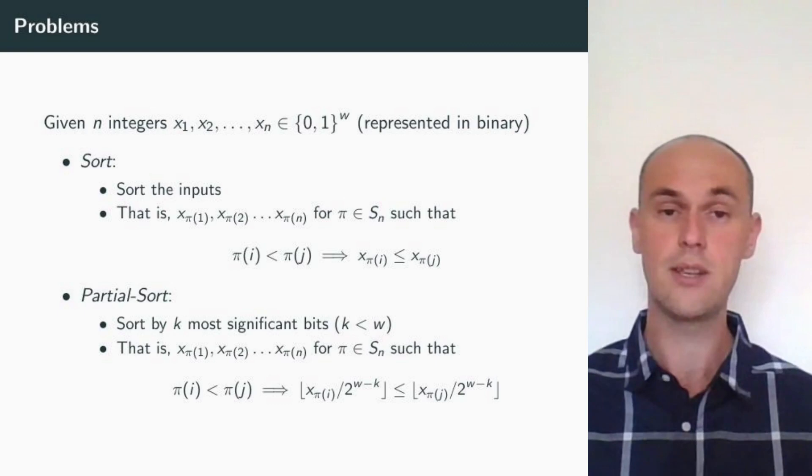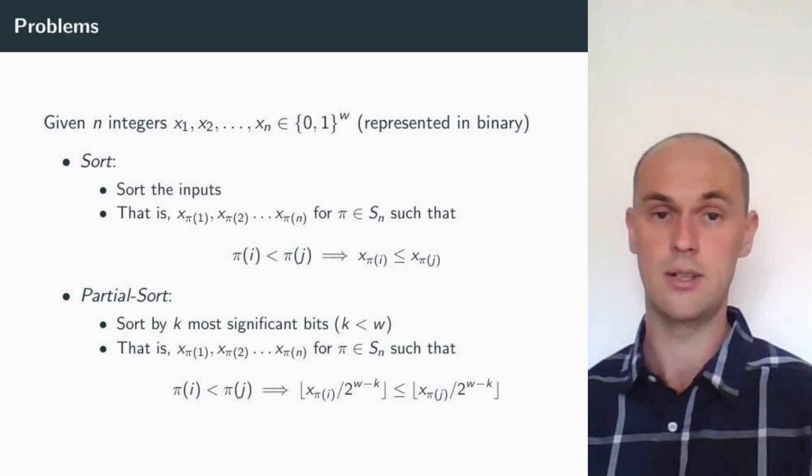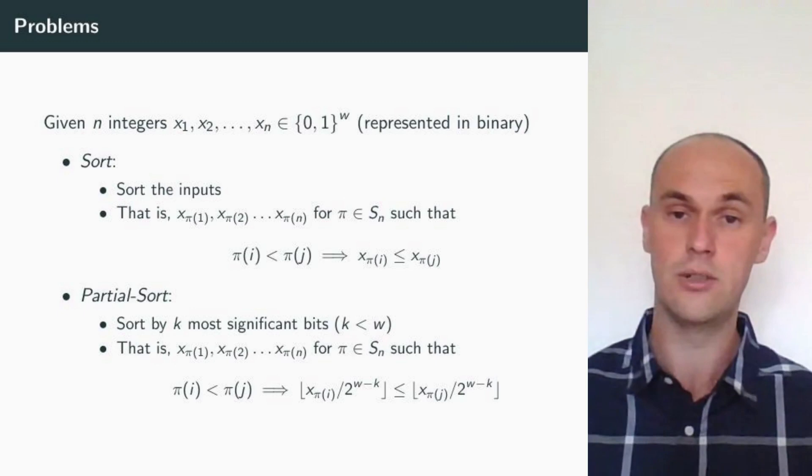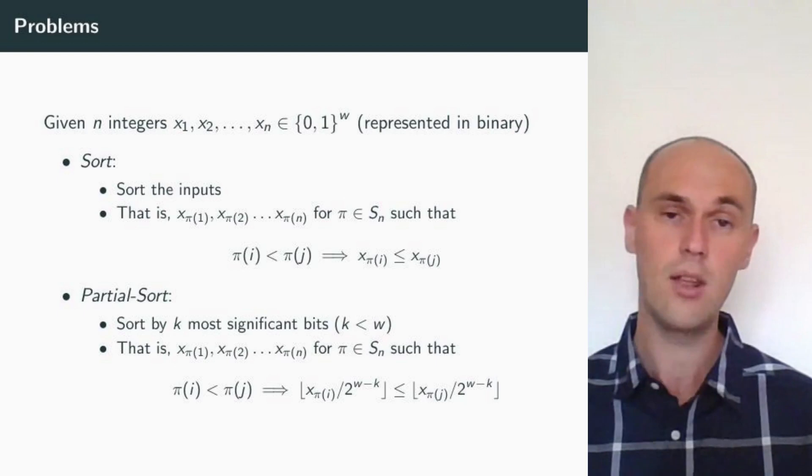Our problem is sorting. Given n integers x1, x2 up to xn, each represented in binary by w bits, we are supposed to return them sorted in non-decreasing order. Or we are supposed to sort them just partially by their k most significant bits.